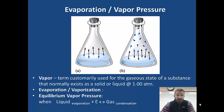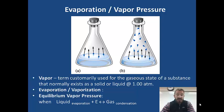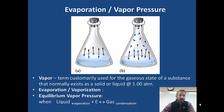First of all, let's define the idea of vapor. Vapor is a term customarily used for the gaseous state of a substance that would normally exist as a liquid or solid at one atmosphere. For example, the water molecule is normally liquid, so we refer to water as being a vapor when it's in the gaseous state.